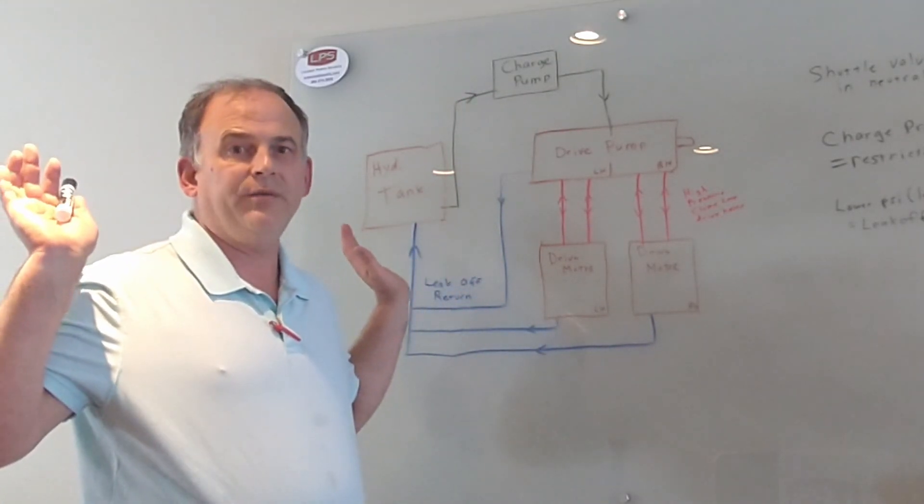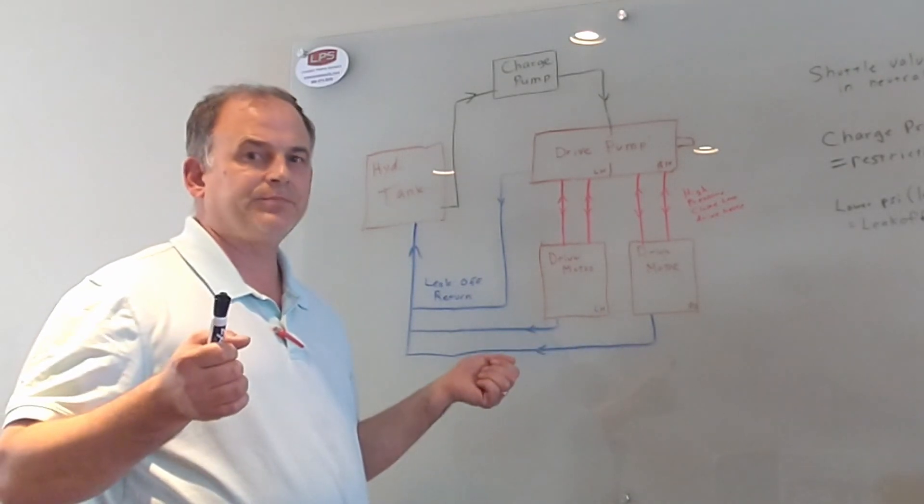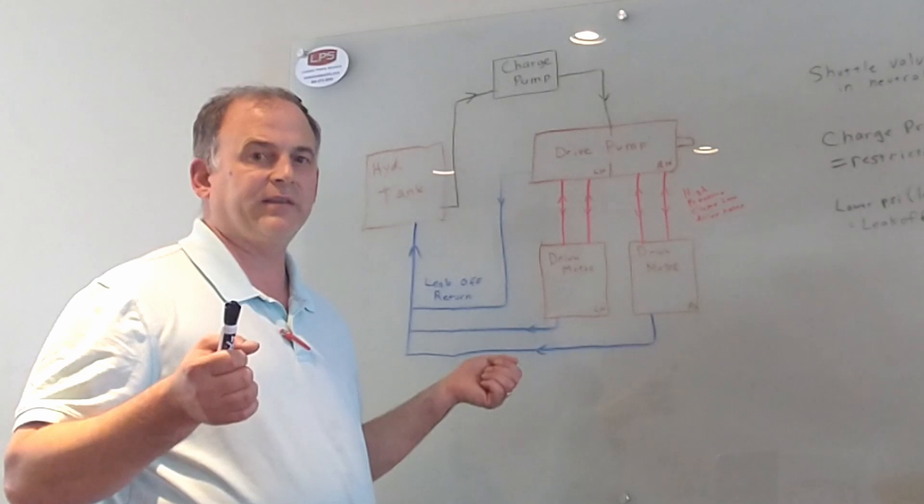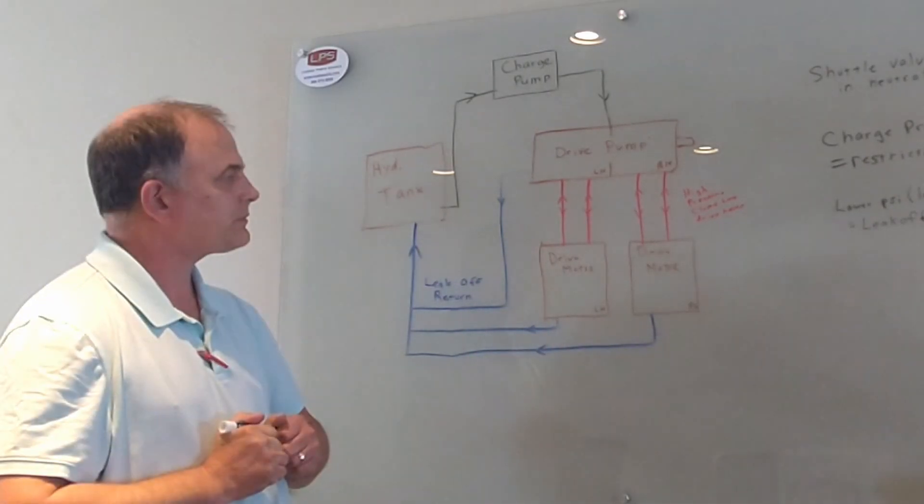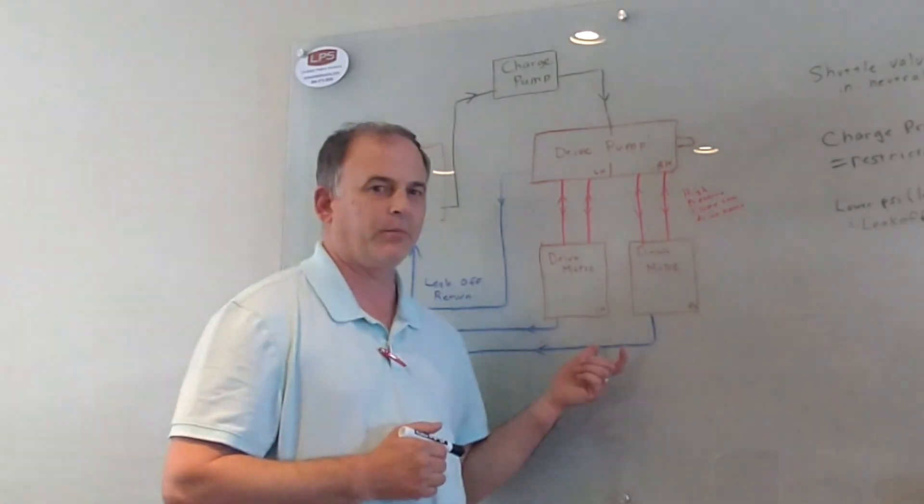But when you idle the machine down to where you have six gallons or less, that's where your charge pressure starts to drop. So what happened to this guy that really tricked him up is he hadn't checked his - I don't know how much he checked, but we hadn't talked about his charge pressure this much yet.